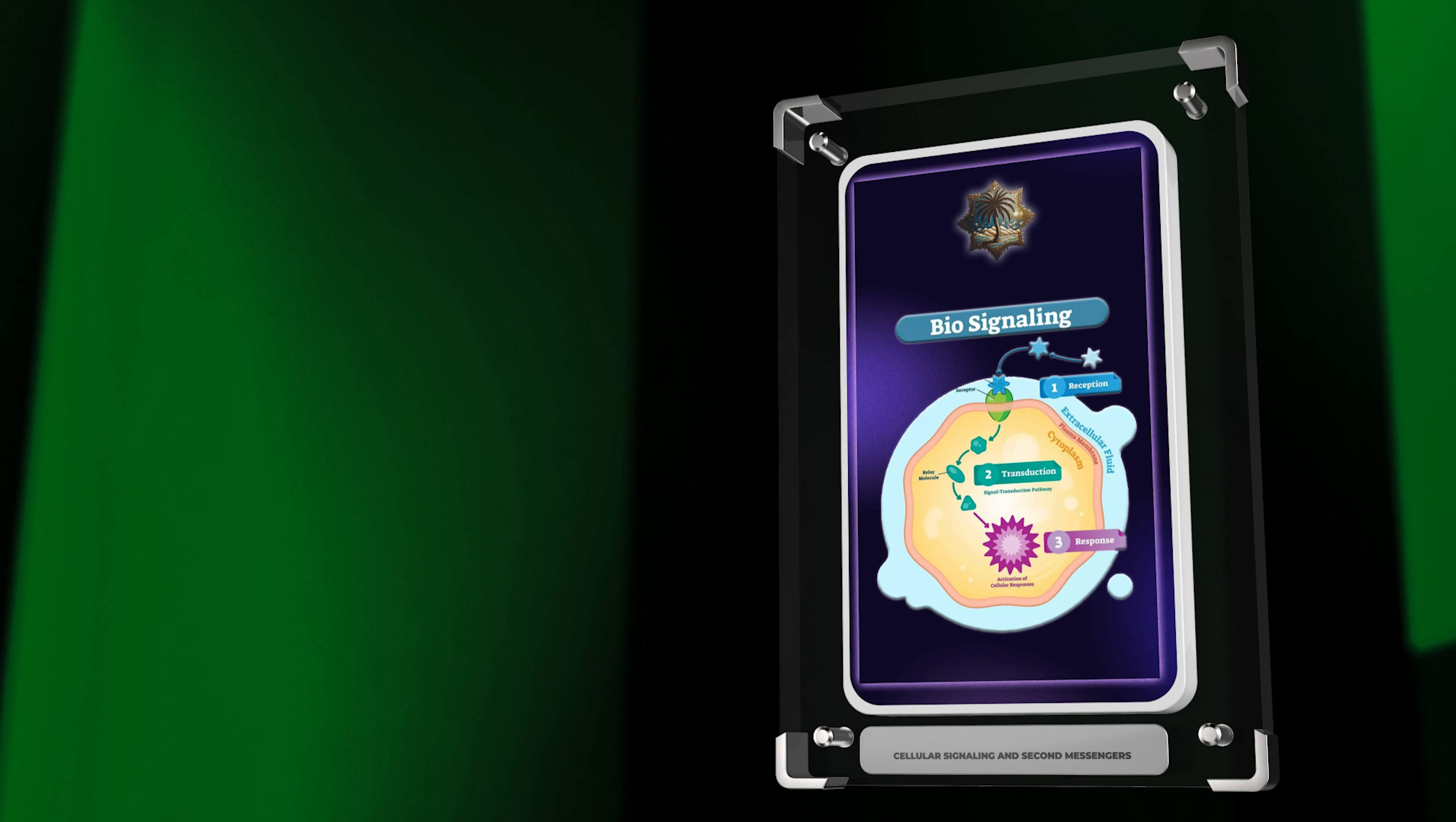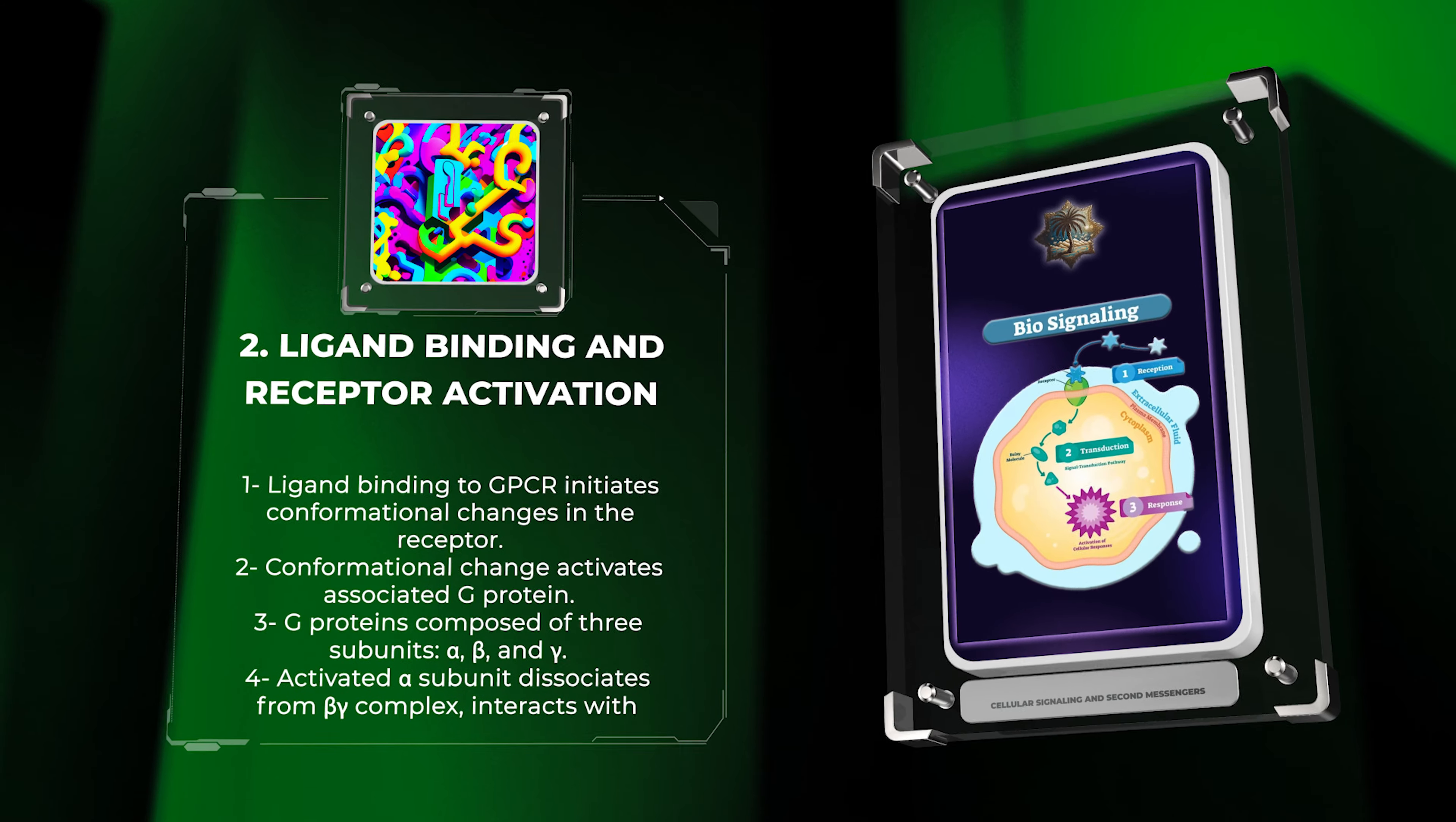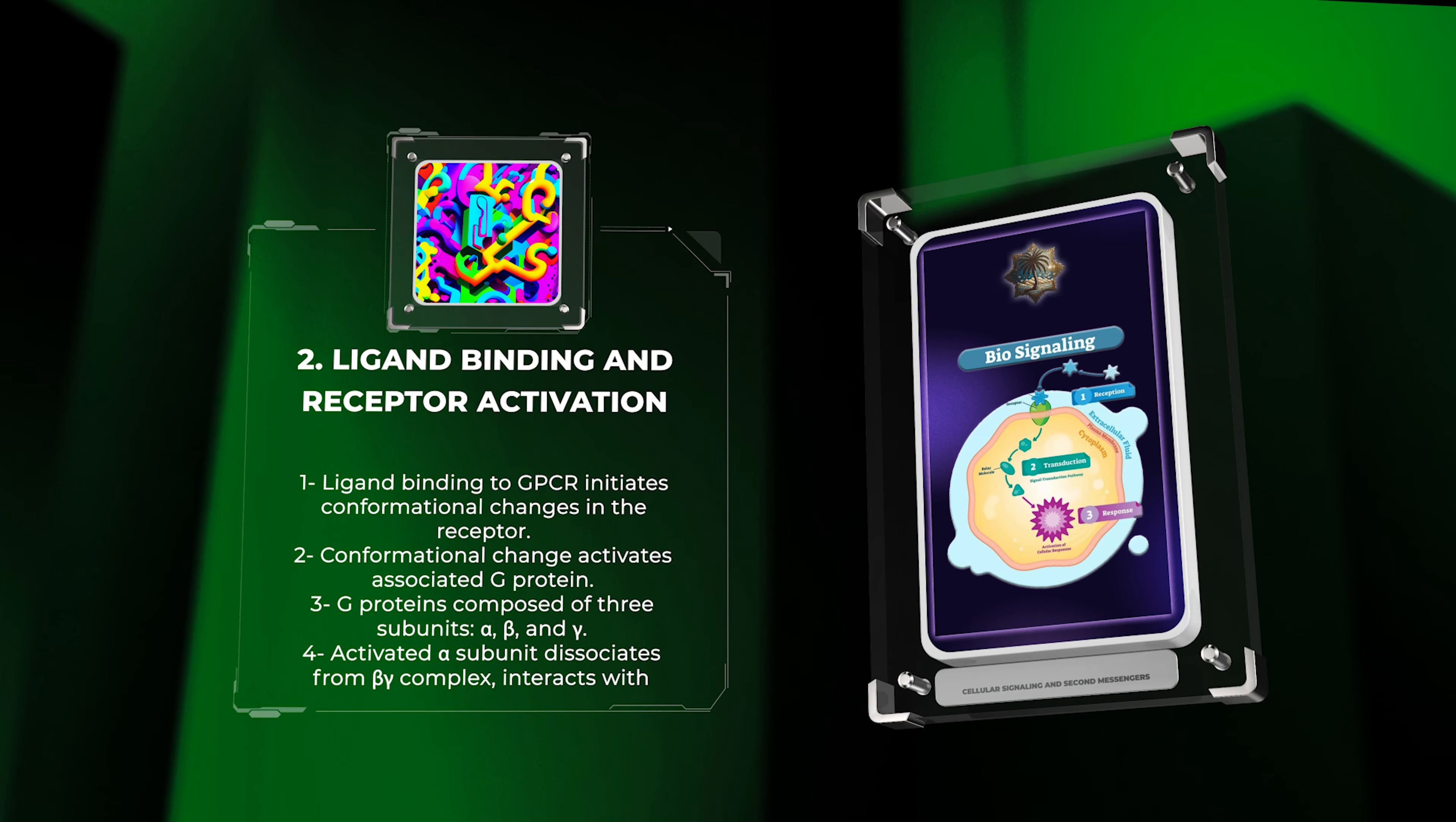The binding of a ligand to a GPCR initiates a series of conformational changes in the receptor. This conformational change leads to the activation of the associated G-protein. G-proteins are composed of three subunits: alpha, beta, and gamma.